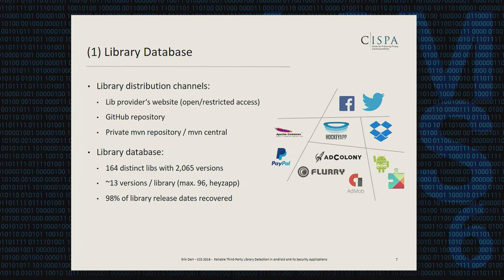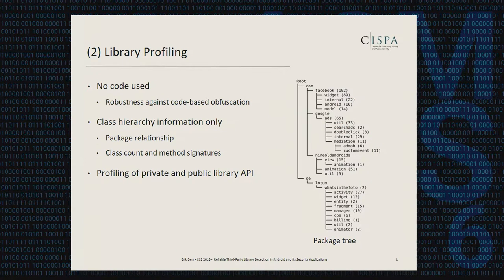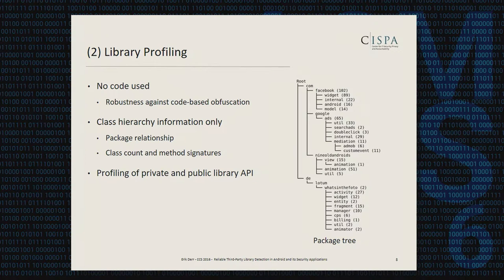Now, how do we create the actual profiles? As a design decision, we decided not to use bytecode at all, which gives us immediate robustness against any code-based obfuscation technique. This leaves class hierarchy information only for building profiles. You can see a partially unobfuscated package tree of some application, showing package relationships, sub-packages, the number of classes per package in brackets — all this information along with method signatures is used to generate the actual profile.